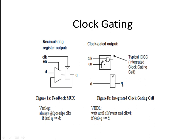The output Q is gated like this. This is the typical ICG — Integrated Clock Gating cell. The clock is not directly given but through the enable signal. Whenever you don't require it, we want to switch off this Q output, so we will use the enable signal. By this, you can control the output Q and thereby save the power.